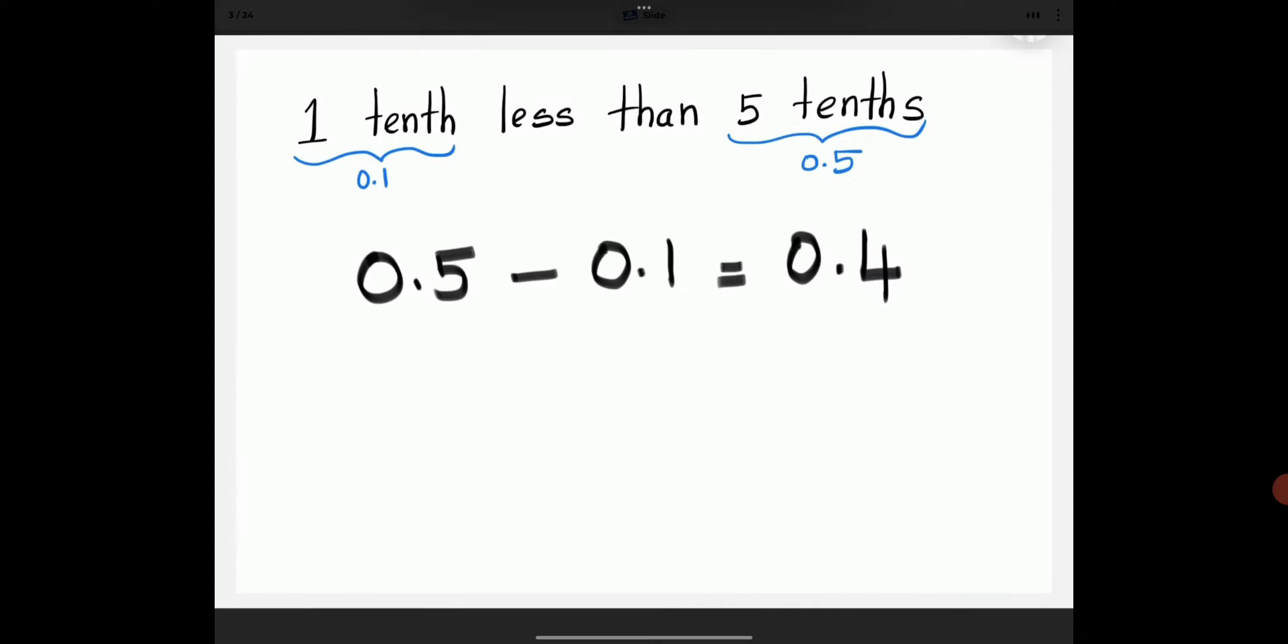1 tenth is 0.1. 5 tenths is 0.5. So, 1 tenth less than 5 tenths is 4 tenths.